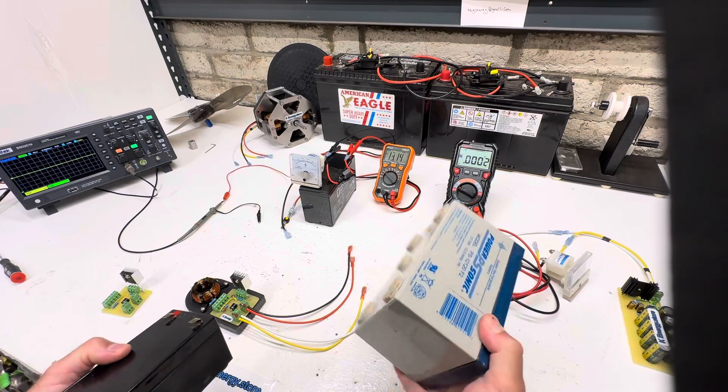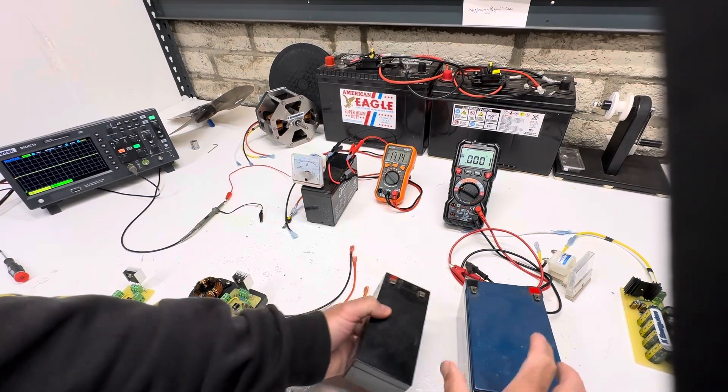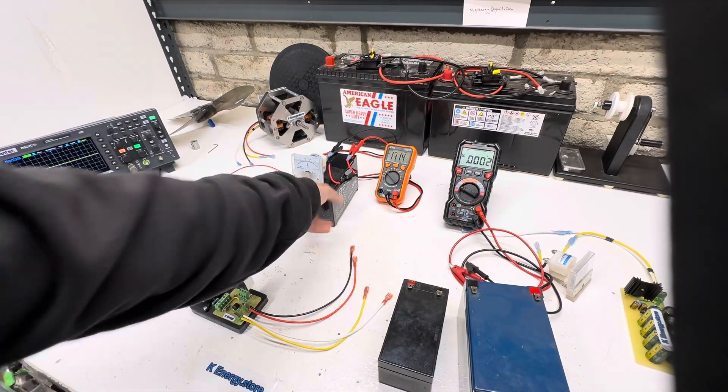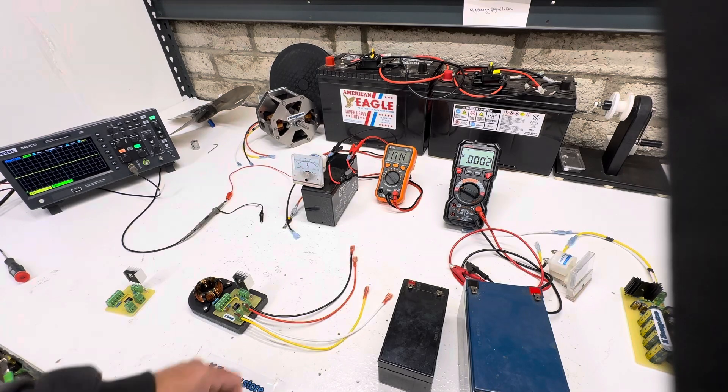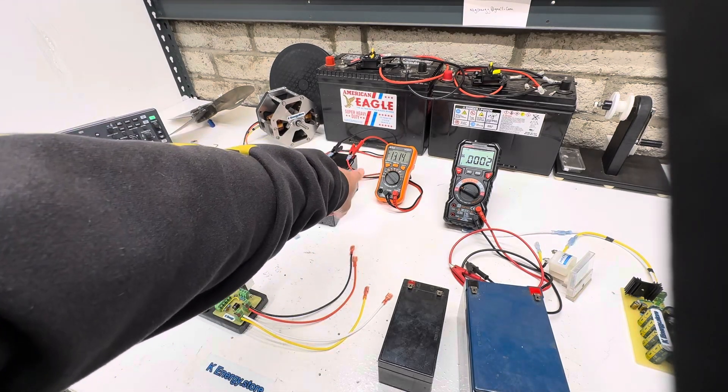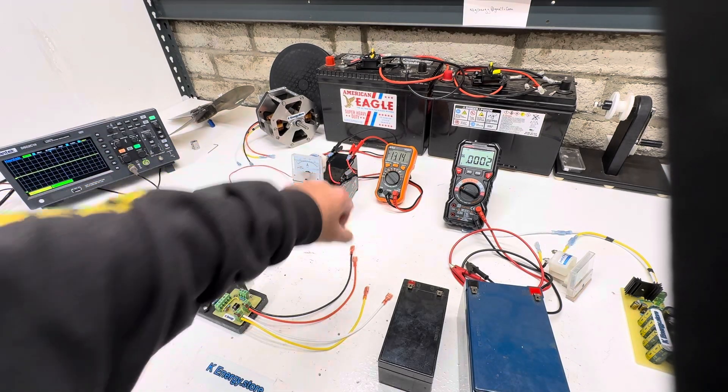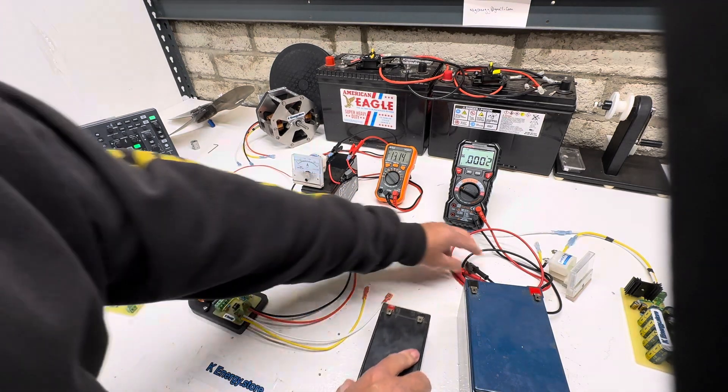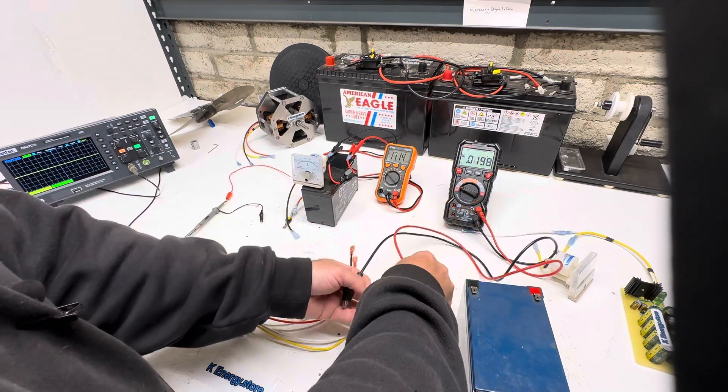This is a 12 amp hour, and then we have a little 7 amp hour that's going to be powering it. This battery is sitting at 13.14, and then we'll hook this right here onto here.